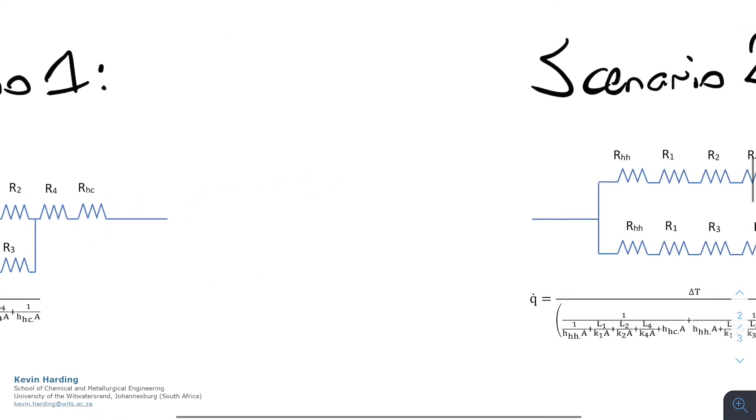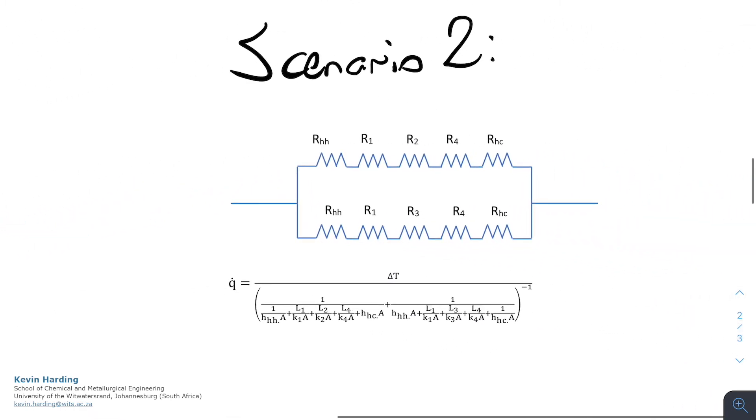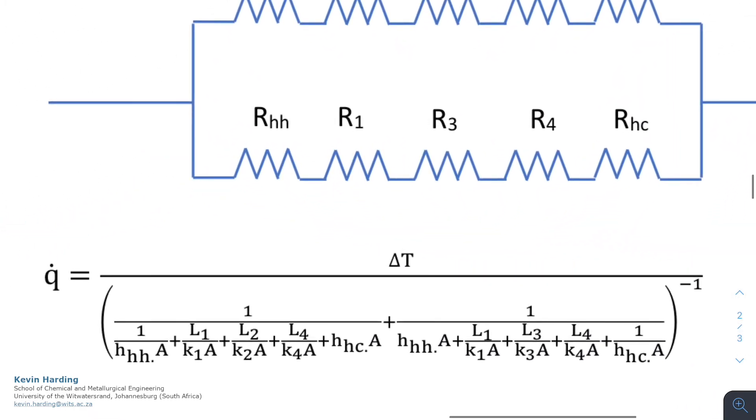If we do the same and neaten up for scenario two, we've now got that more complicated scenario underneath for the resistance, and please don't forget this is written out neatly in the notes, so you can go and have a look and see what it looks like there.